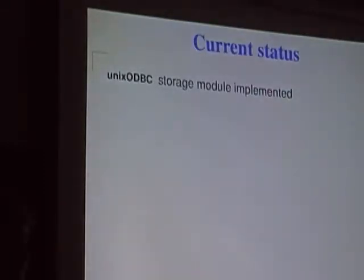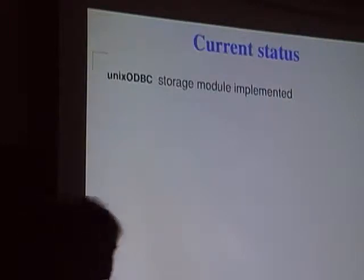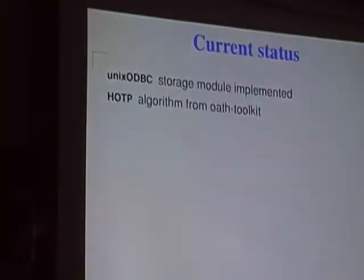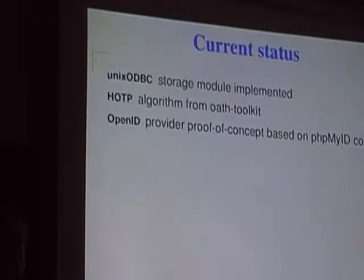The current project status: Unix ODBC support is in place so it can be used with a range of databases. No management tools are provided yet, but having the data access layer enables the next set of work to commence. It implements the HOTP algorithm, though not yet TOTP. OpenID is fully functional using the PHP MyID solution, which has been patched to integrate with the backend.